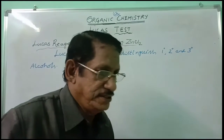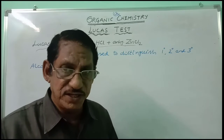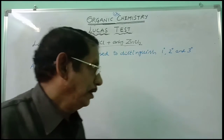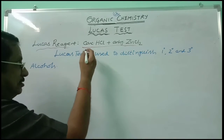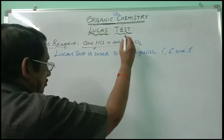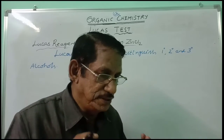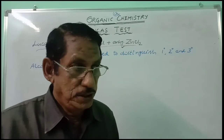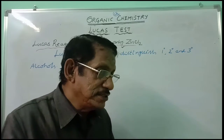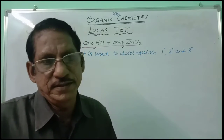Let us know the reason why tertiary alcohol reacts more readily with Lucas reagent. The Lucas reagent contains concentrated HCl and anhydrous zinc chloride. This mixture can be treated as a strong acid — in fact, the mixture of concentrated HCl and anhydrous zinc chloride is even stronger than concentrated HCl alone.